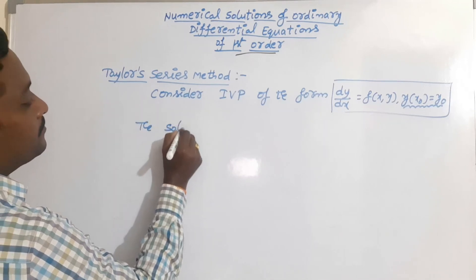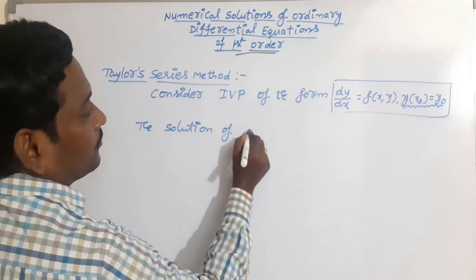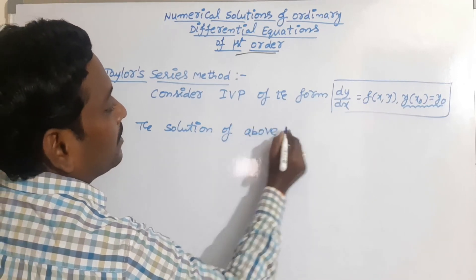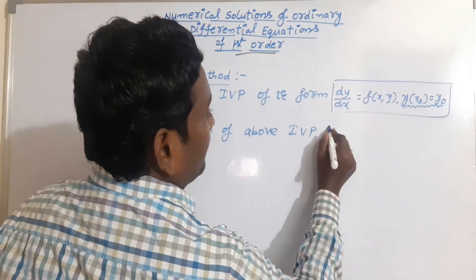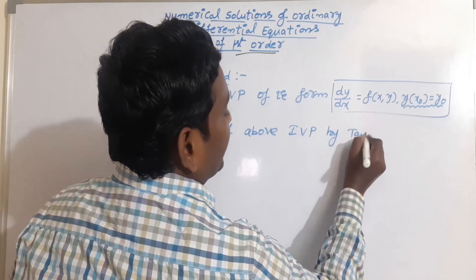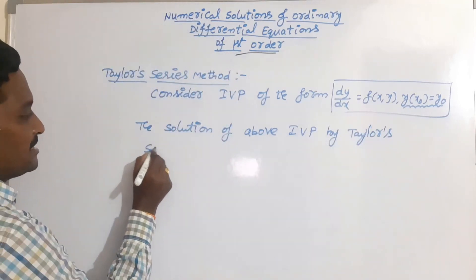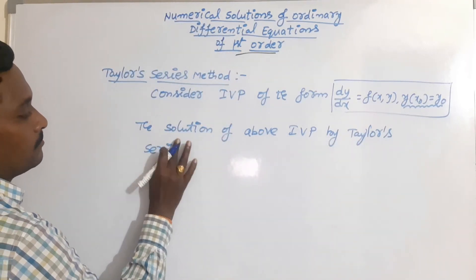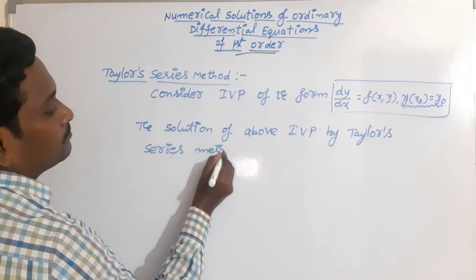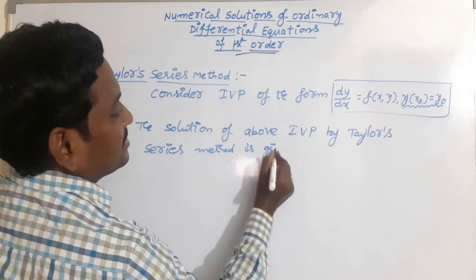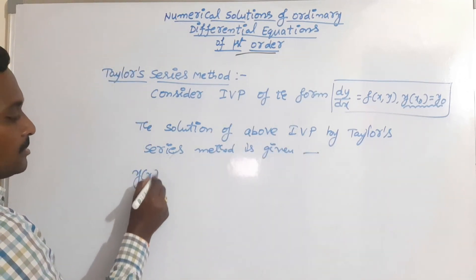The solution of the above initial value problem by the Taylor series method is given as: y of x is equal to...